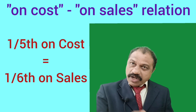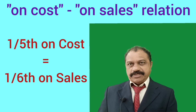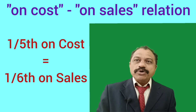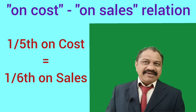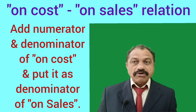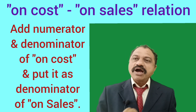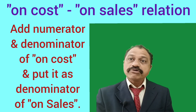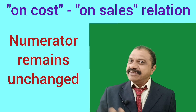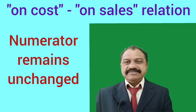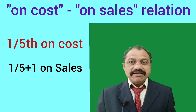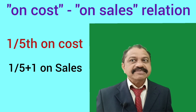From Point number 1 and Point number 2, we can arrive at a new logic: Profit on cost is equal to one-sixth on sales. I am also going to give you the most important trick — a shortcut for On-Cost to On-Sale conversion. Suppose you have the profit fraction on cost; add the numerator and denominator of the On-Cost fraction and put the result as the denominator of the On-Sale fraction. The numerator remains unchanged. For example, 1/5 on cost equals 1 by (5+1) on sales, that is 1/6 on sales.